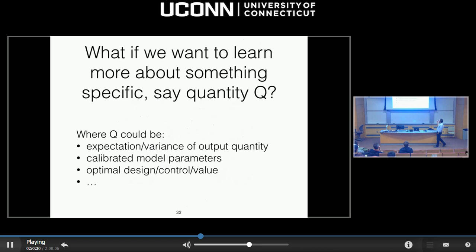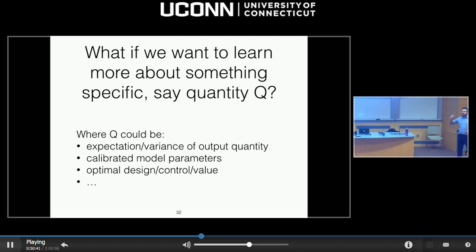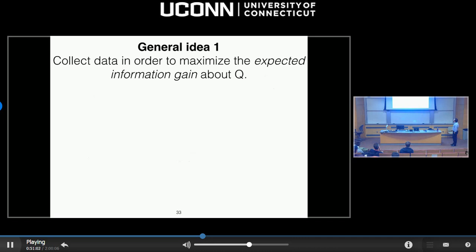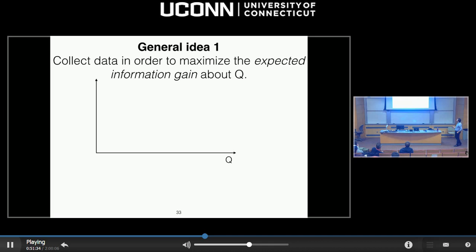So I pose this question: what if we want to learn more about something specific — another quantity of interest Q? Where Q could be the expectation or variance of your output, calibrated model parameters, the optimal design or control, or the optimal value of an optimization problem. The generic answer that applies to everything is: collect data in order to maximize the expected information gain about Q. The expected information gain is a well-defined mathematical term. It represents the distance between your state of knowledge before and after observing a hypothetical simulation result, averaged over all possible outcomes.